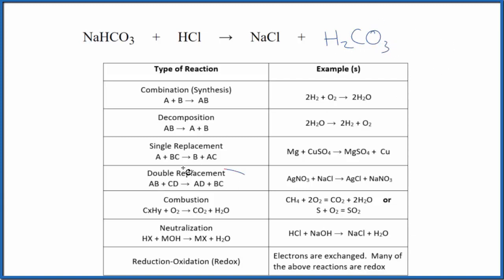So now this does look like a double displacement reaction. We have the metals, the sodium and the hydrogen, they're switching places. Sodium, now it's with the chlorine, that's the sodium chloride. The hydrogen is with this bicarbonate ion here, so we get hydrogen carbonate. So this is a double displacement reaction.